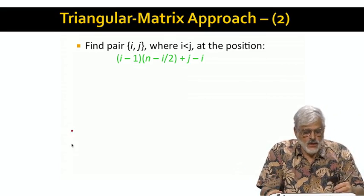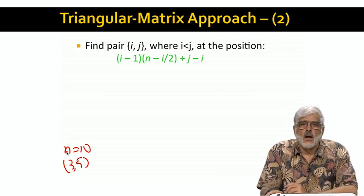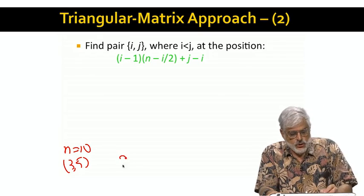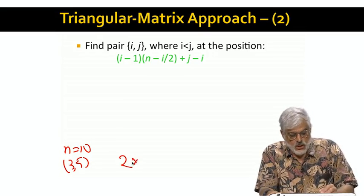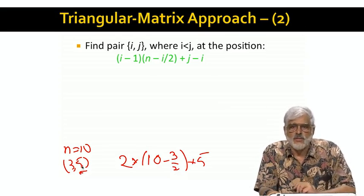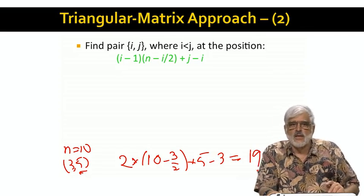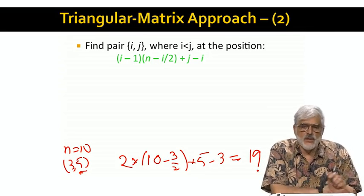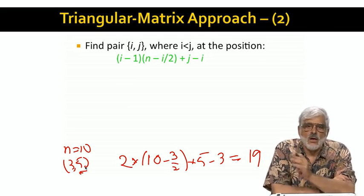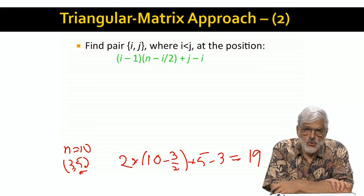But for example, if n equals ten, let's look at the pair three, five. I claim it is at position two, that's i minus one, i is three of course, times ten, that's n, minus i over two, that's three halves, plus five, that's j, remember j is five, and then minus three, which is i. You work that out, it's 19. That makes sense because there are nine pairs ahead of the pair three, five that have a one as the lowest member of the pair. There are another eight pairs that have two as the lowest. And then there's one more pair, three, four, that comes ahead of three, five.